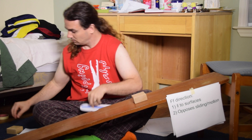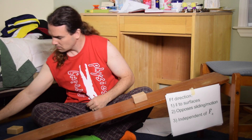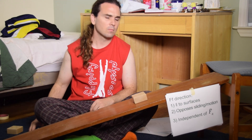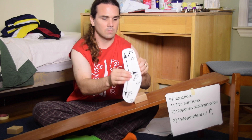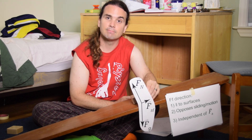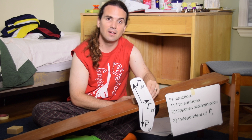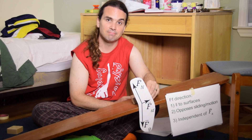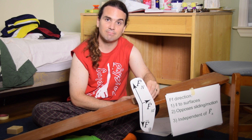Third, the force of friction is independent of the direction of the force applied. People often think the force of friction is opposite the direction of the force applied, however that is not true. You can see there is no force applied in this free body diagram. Therefore, the direction of the force of friction is definitely independent of the direction of the force applied. Again, the direction of the force of friction is always parallel to the surfaces, opposes the sliding motion of the two surfaces relative to one another, and is independent of the direction of the force applied.